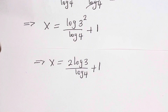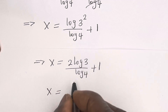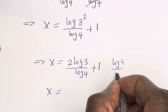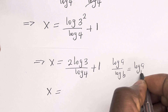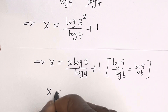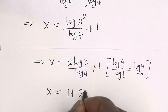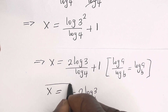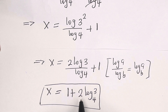We have s is equal to 2 log 3 over log 4 plus 1. Using the change of base formula, log a over log b is equal to log a base b. Then s is equal to 1 plus 2 log 3 base 4. This is the final answer.